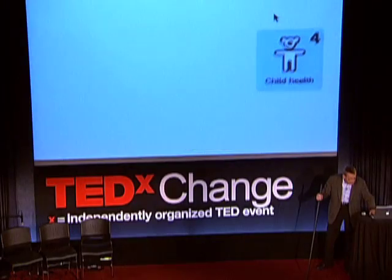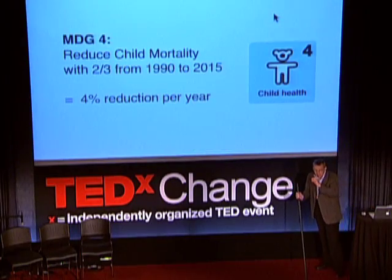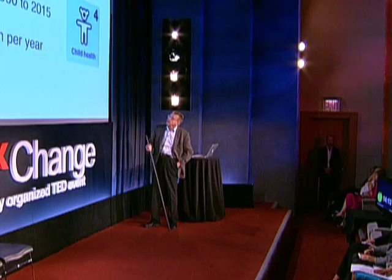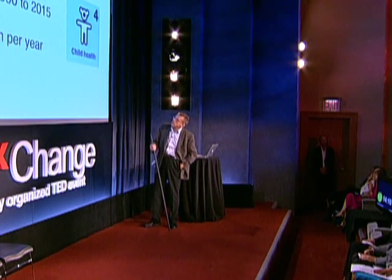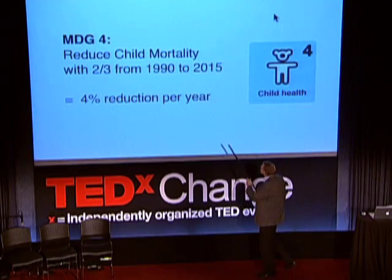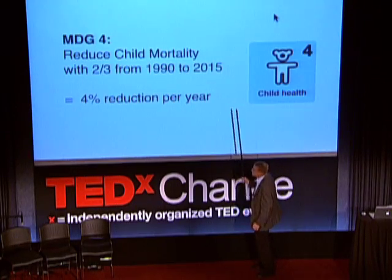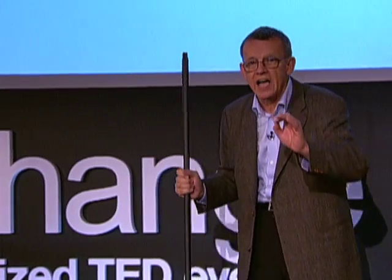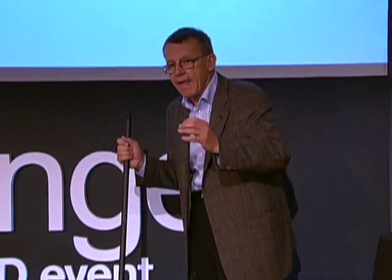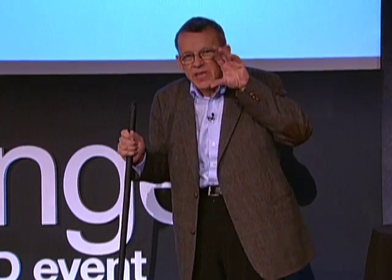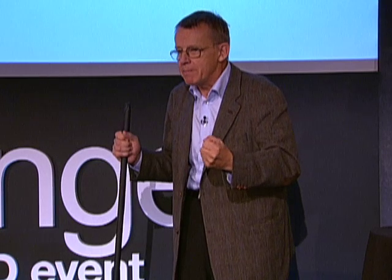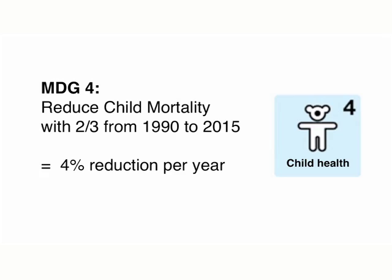There's a second reason I like these development goals, and that is because each and every one is measured. Take child mortality. The aim is to reduce child mortality by two-thirds from 1990 to 2050 — that's a 4% reduction per year. And this measuring is what makes the difference between political talking and really going for the important thing: a better life for people.